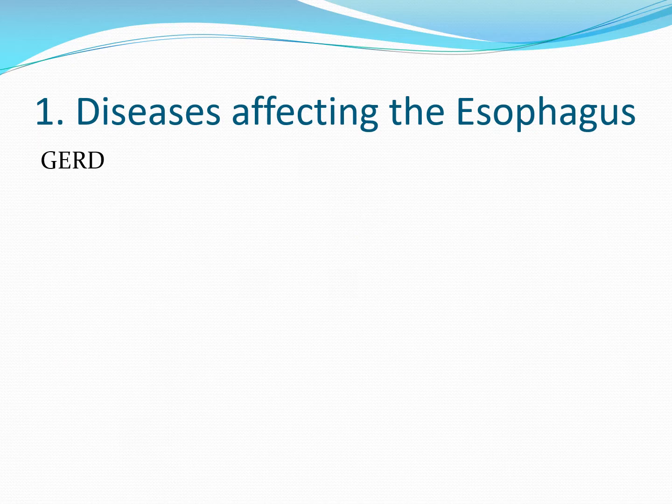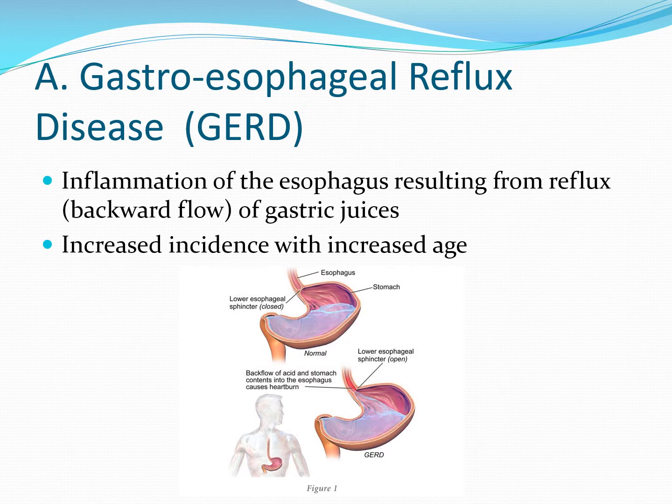The first disorder we'll discuss is a disease that influences the esophagus, called gastroesophageal reflux disease, or GERD for short. GERD is caused by inflammation of the esophagus that results from backflow of gastric juices from the stomach. Normally, the lower esophageal sphincter stays closed and gastric juices remain in the stomach. However, if the lower esophageal sphincter loses tone, as we sometimes see with age, gastric juices may backflow up into the esophagus. This is commonly thought of as heartburn and is most commonly seen in individuals over 50 years of age.